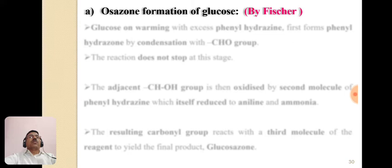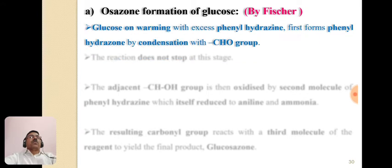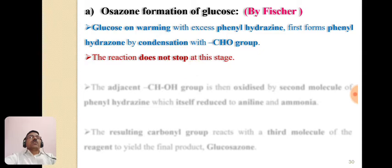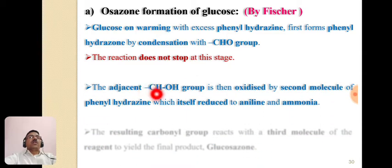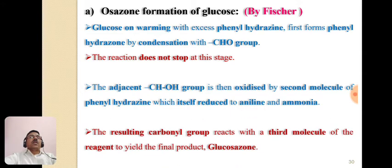Let us see the formation of glucosazone according to Fischer. When glucose is warmed with excess of phenylhydrazine, first it forms a phenylhydrazone by condensation with the aldehyde group. This reaction does not stop at this stage — the adjacent CHOH group is then oxidized by the second molecule of phenylhydrazine, which itself undergoes reduction to form aniline and ammonia. The resulting carbonyl group reacts with the third molecule of phenylhydrazine to form the final product, glucosazone.